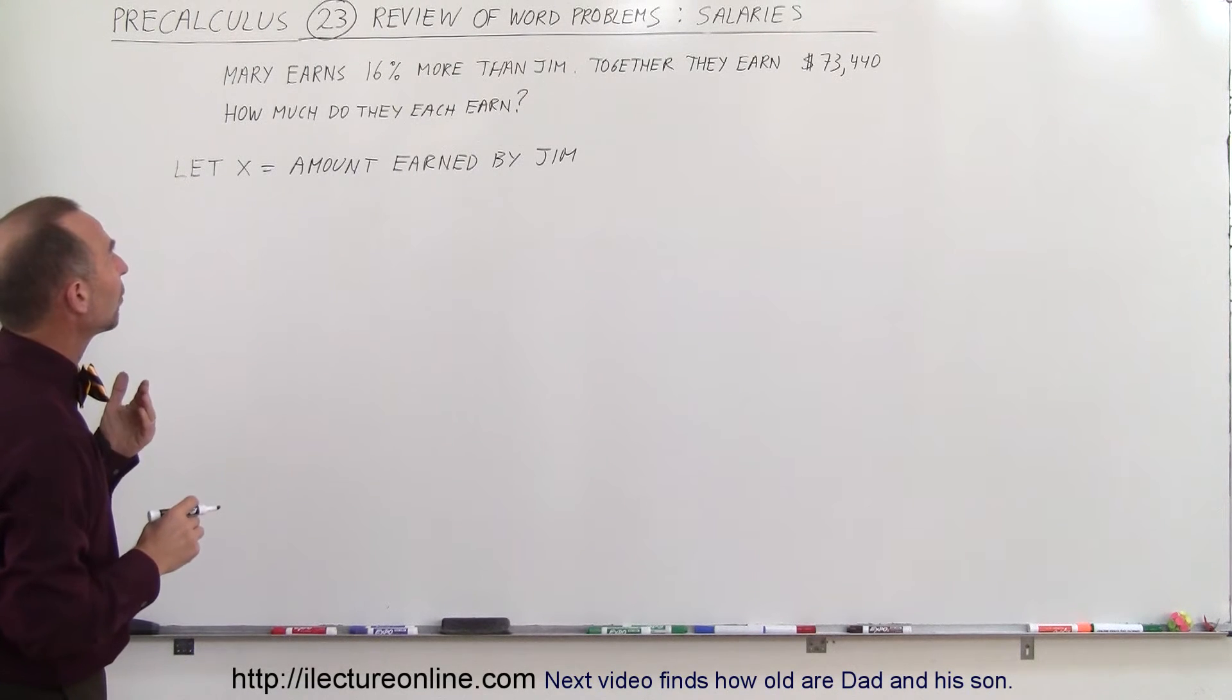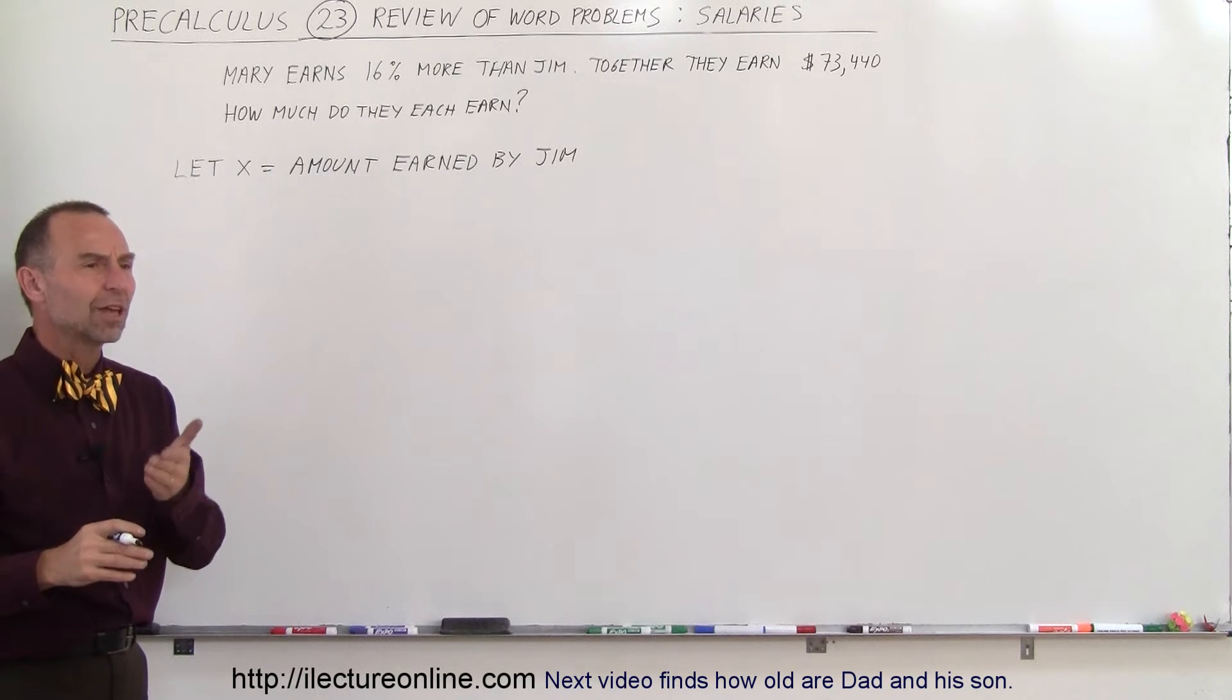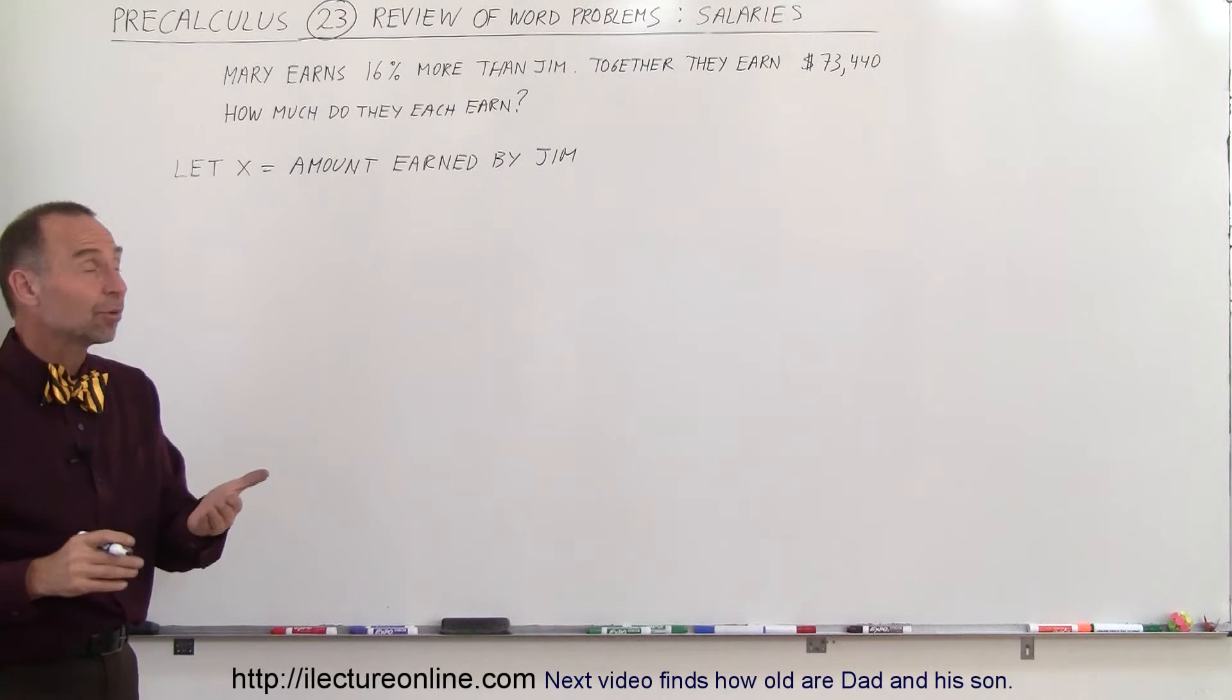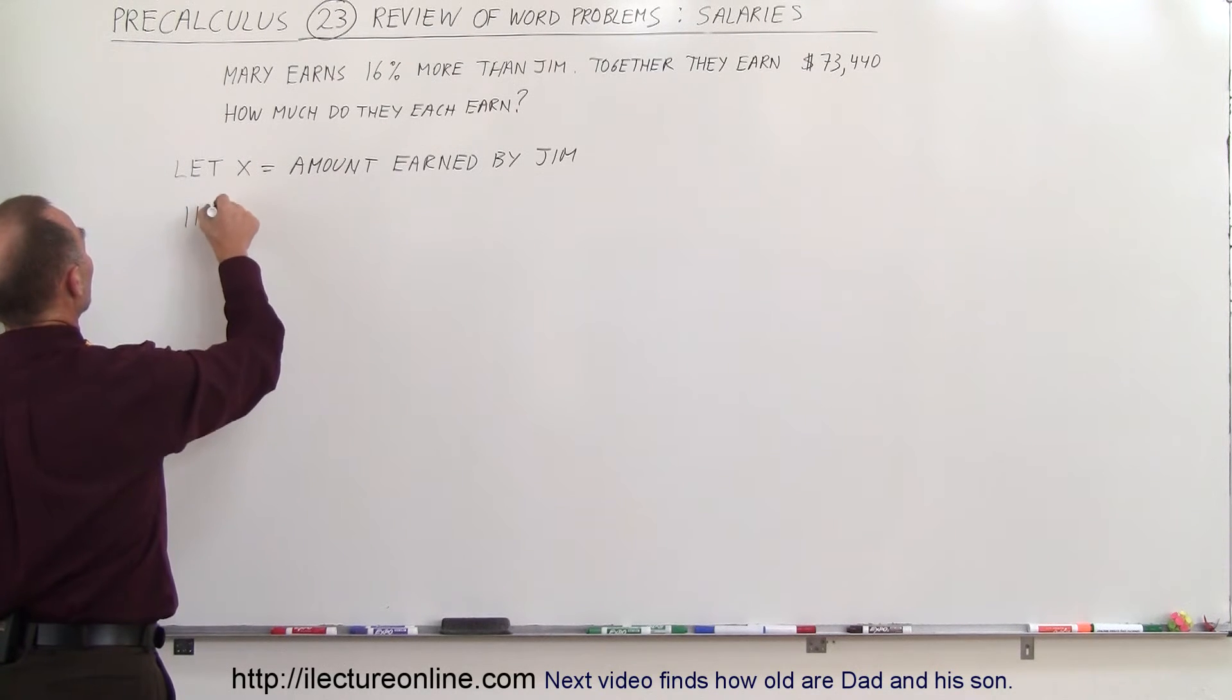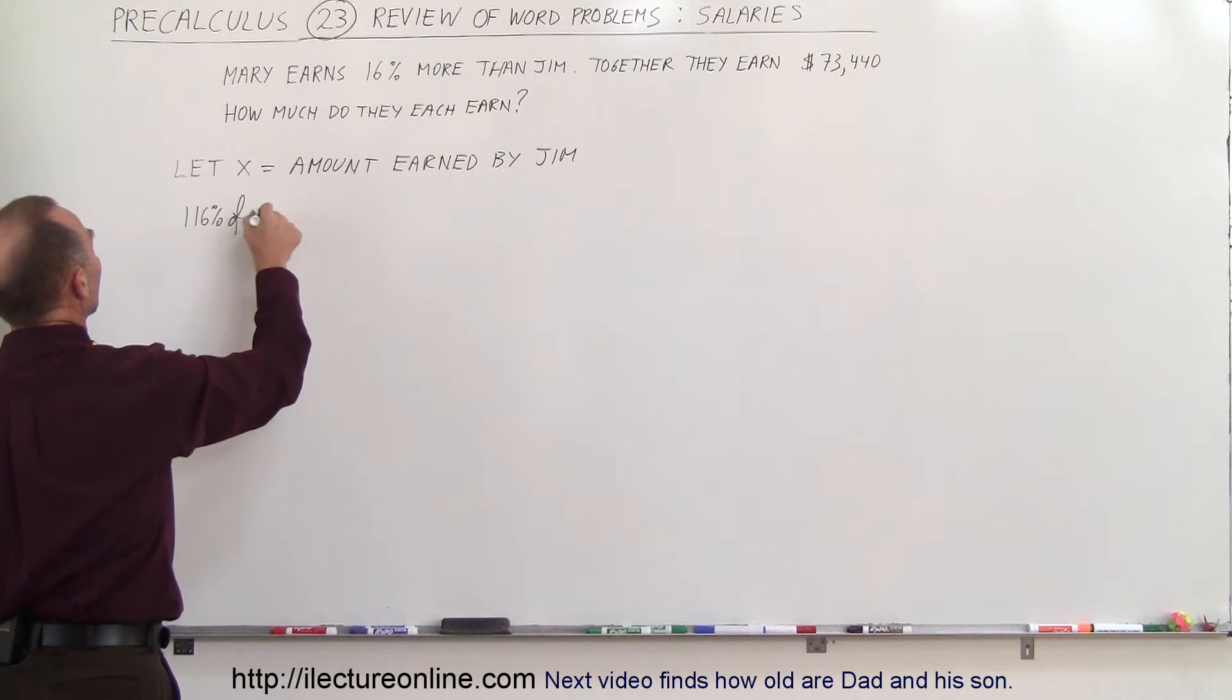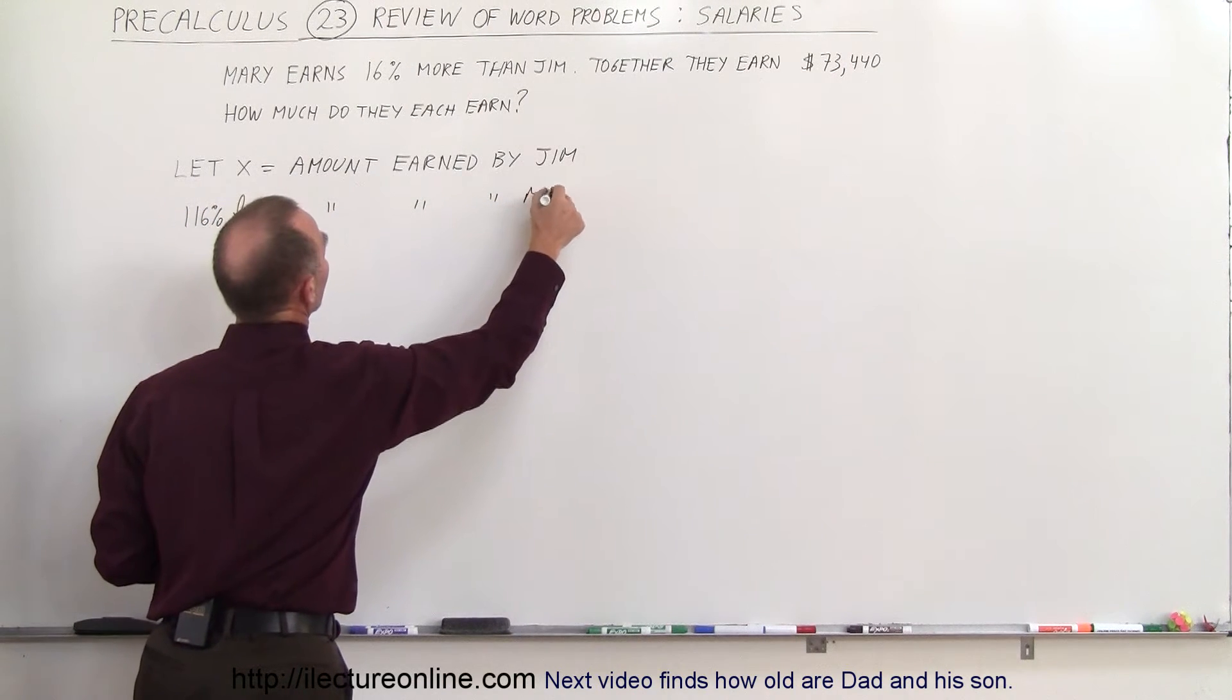Now how do we represent the amount that Mary earns? Well since Mary earns 16% more, Mary would earn 116% of what Jim earns. Therefore, 116% of x equals the amount earned by Mary.